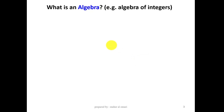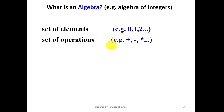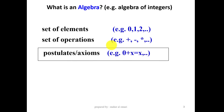What is an algebra? For example, the algebra of integers. It is a set of elements, and a set of operations, and a set of rules — postulates and theorems.